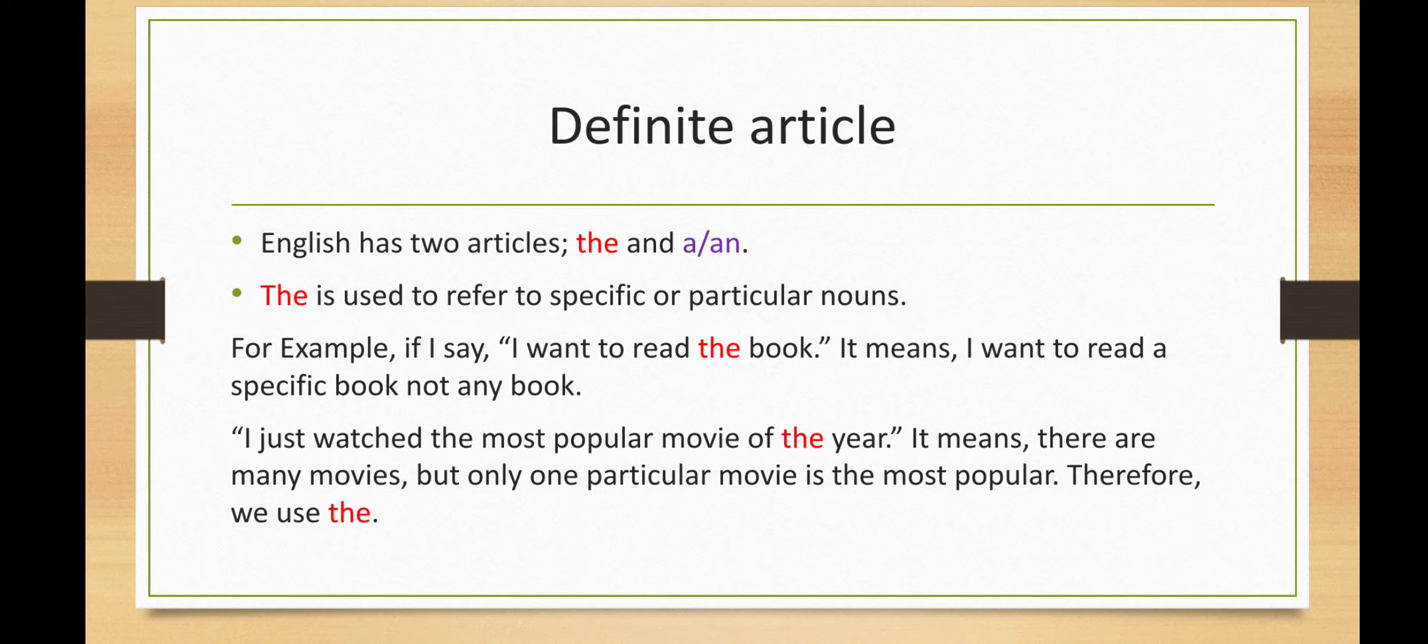Definite article. English has two articles: the and a or an. The is used to refer to specific or particular nouns. For example, if I say I want to read the book, it means I want to read a specific book, not any book.